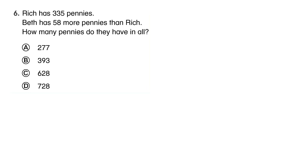Number six from the topic 10 Try Your Best test. Rich has 335 pennies. Beth has 58 more pennies than Rich. How many pennies do they have in all? So we know that we have Rich and we know that we have Beth.